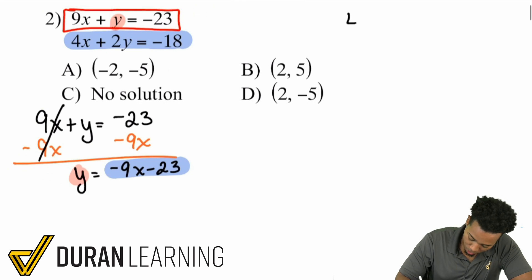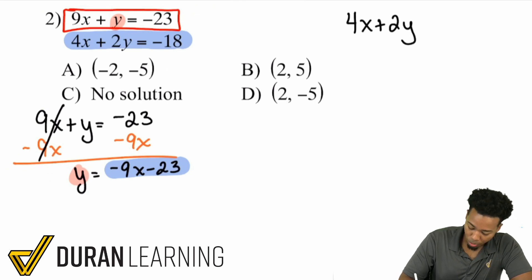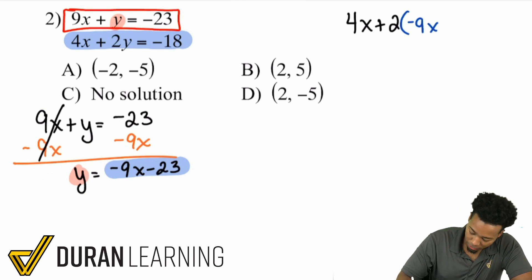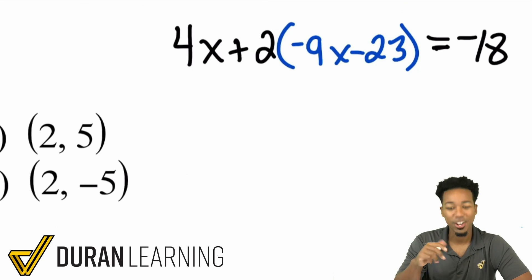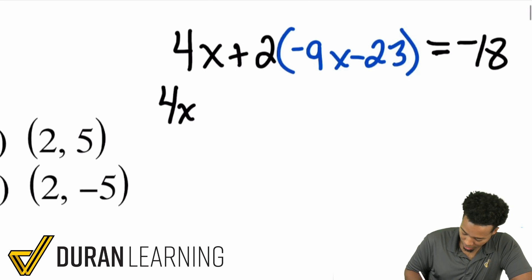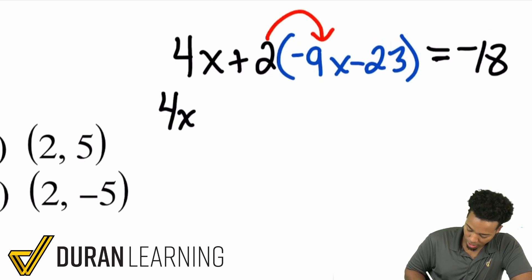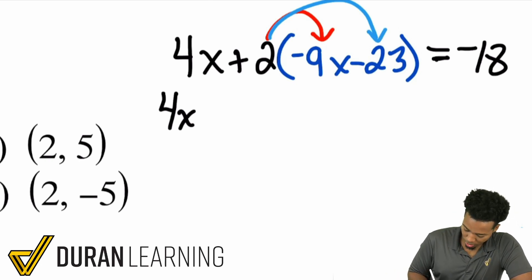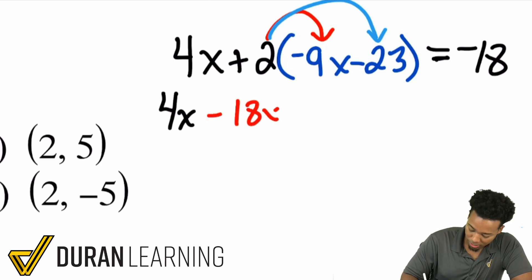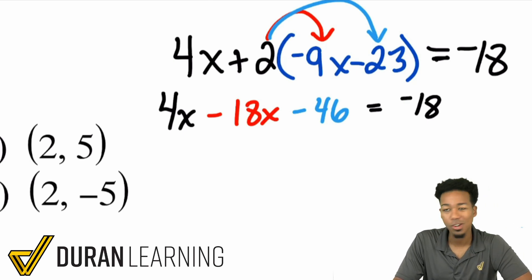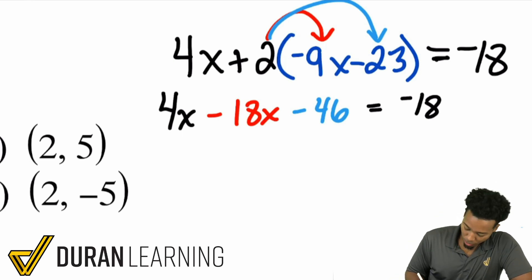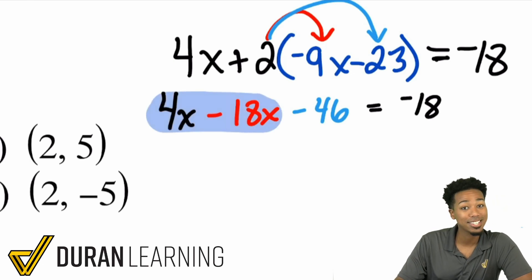I'll write 4X plus 2 times Y, replacing Y with negative 9X minus 23, and that equals negative 18. Now distribute the 2: 2 times negative 9X is negative 18X, and 2 times negative 23 is negative 46. So we have 4X minus 18X minus 46 equals negative 18. Combining like terms, 4X minus 18X is negative 14X, so negative 14X minus 46 equals negative 18.